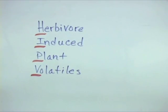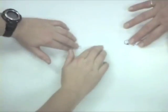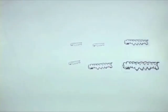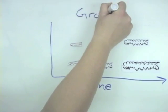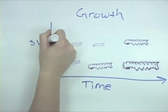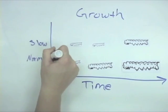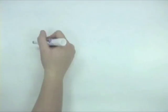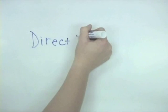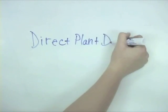These HIPVs do a number of things. They can negatively impact the hornworm directly. For example, the hornworm might eat less and develop more slowly. This is called direct plant defense.